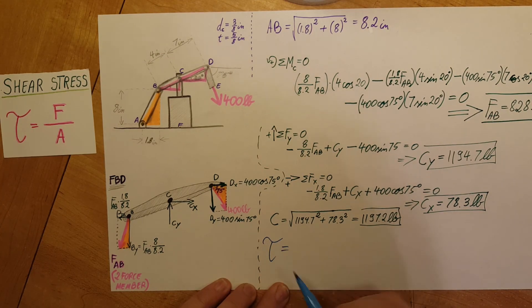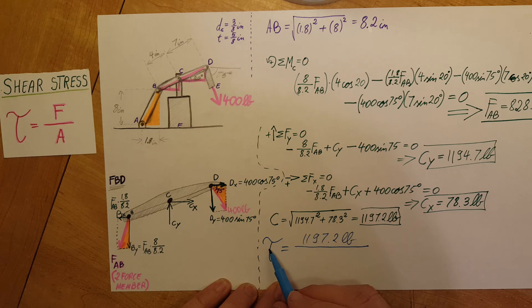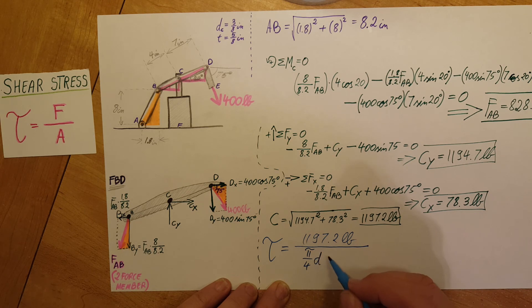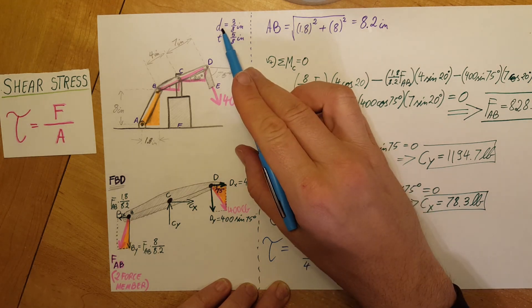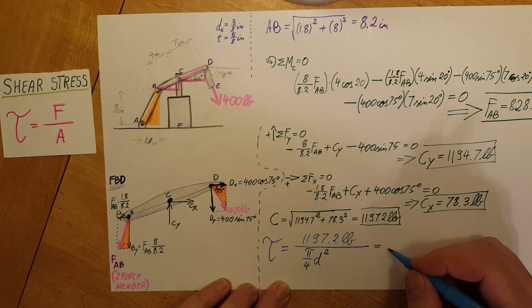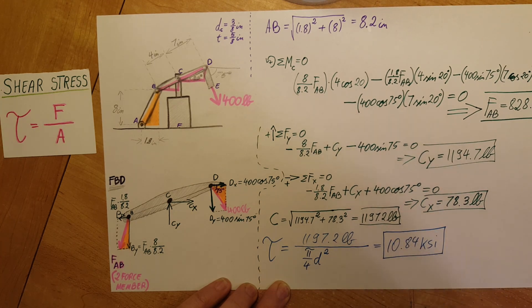Tau equals force over area. My force is 1197.2 pounds. The area is the cross-section of the bolt — a circle — so area equals pi over 4 times d squared, where the diameter is 3 eighths of an inch. Plugging in, we find tau equals 10.84 KSI. That's our first answer — the average shearing stress at point C.